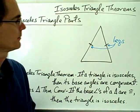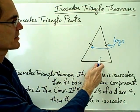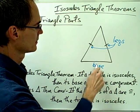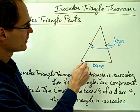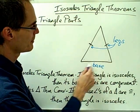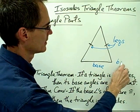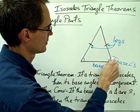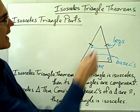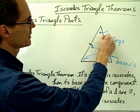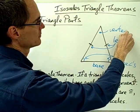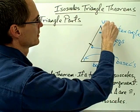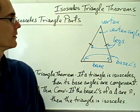So here we have two legs, and the third side of the isosceles triangle — the side that's not a leg — is called the base. The two angles on the base are called the base angles, so we have one base angle here and one base angle here. This third angle up here is called the vertex angle, and this point up here is called the vertex of the isosceles triangle.